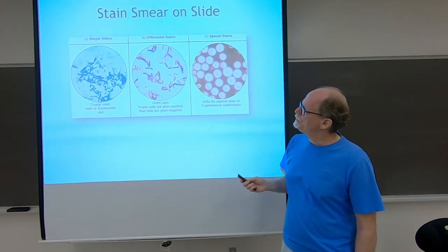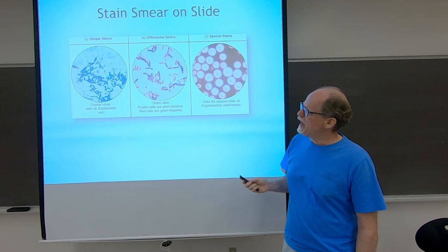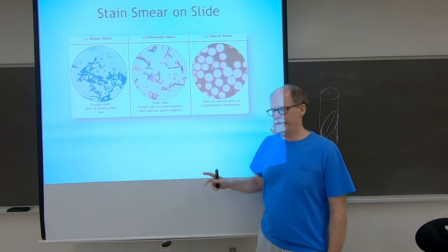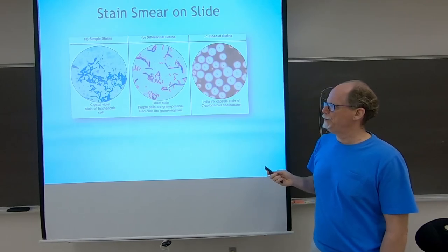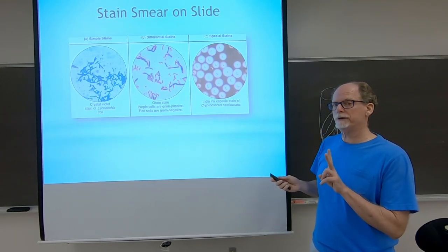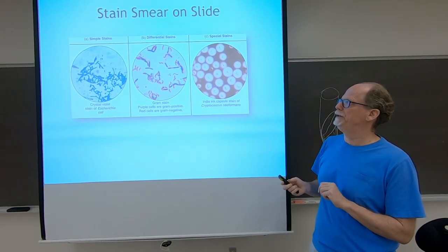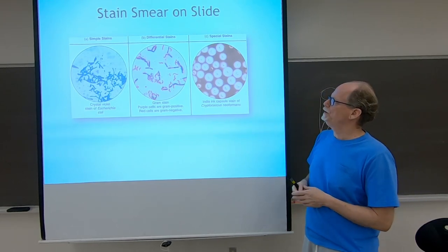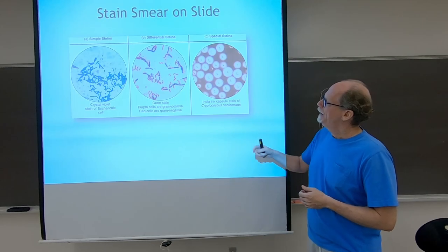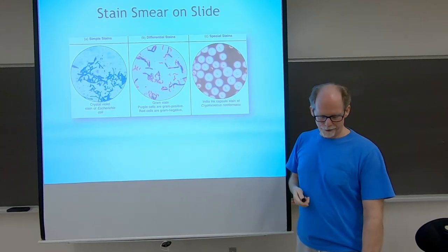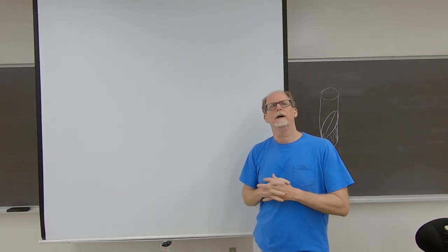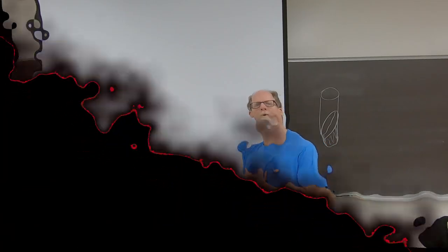There's what's called simple stains where you just have one color. When we use the Gram stain in lab, you generate two different colors. That's referred to as a differential stain because you differentiate between two different types of bacteria. And then the capsule stain would be considered a special stain. We'll talk about that in lab. That's it. This is a pretty quick section PowerPoint.